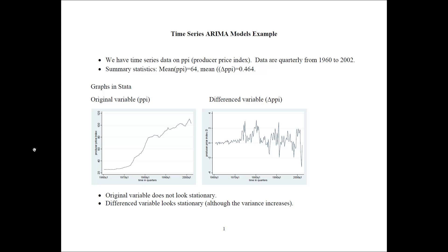So this is the example that we will consider. We have time series data on PPI, the producer price index, and the data are quarterly from 1960 to 2002. As a summary statistic, the mean for the dependent Y variable is 64, and the mean for the difference is 0.464.